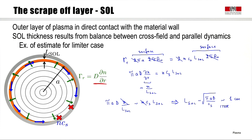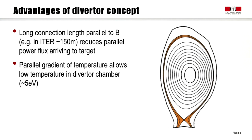Taking typical numbers for ITER with an empirical particle diffusion coefficient D of the order of 1 m²/s, we get something of the order of a centimeter — a very thin layer around the plasma in direct contact with the material wall that will carry a lot of power to a very small surface.